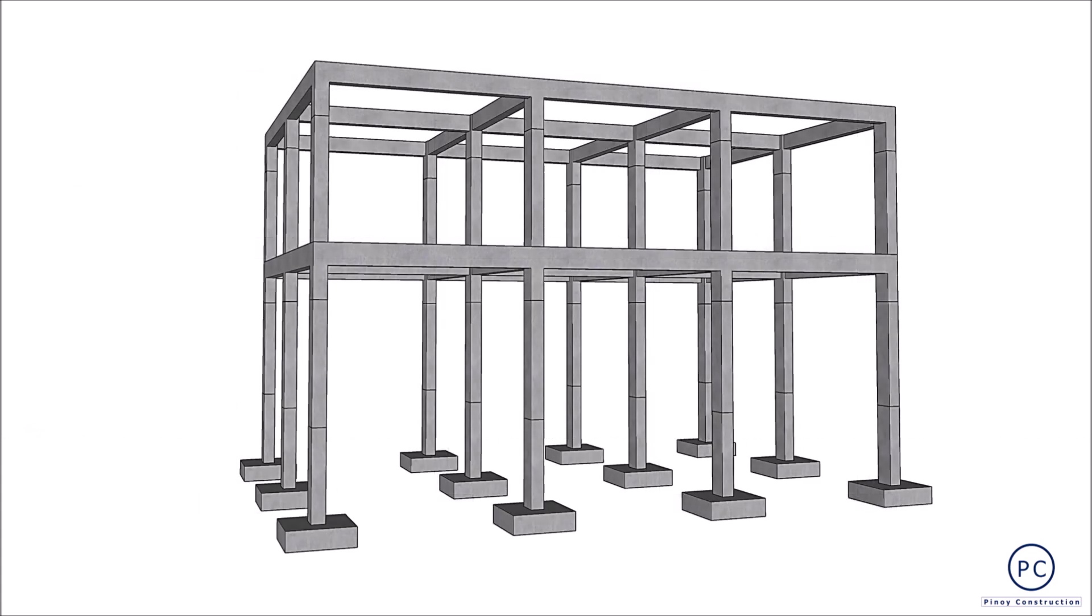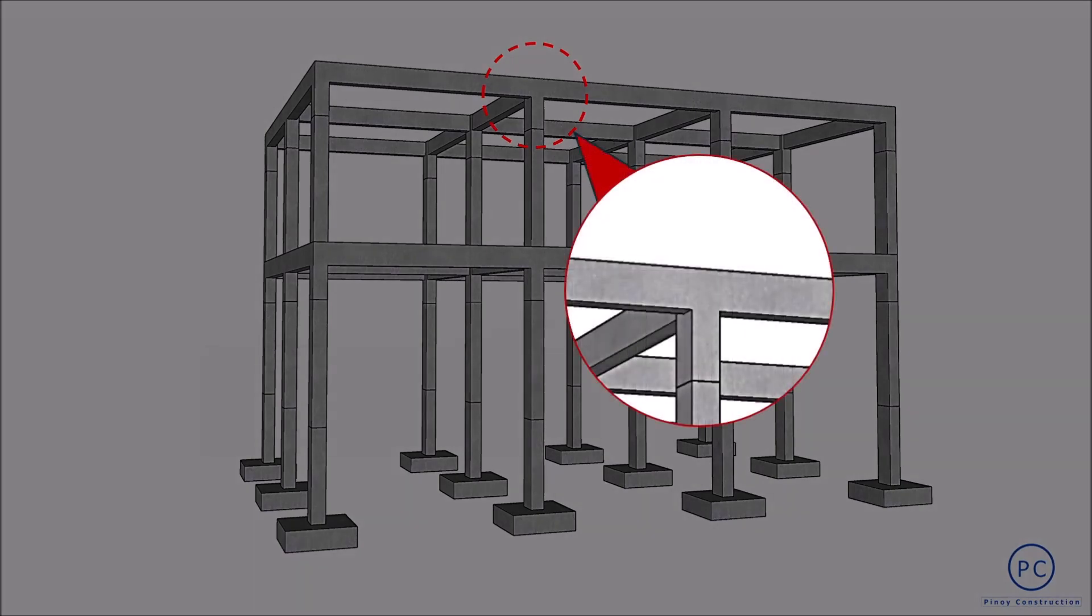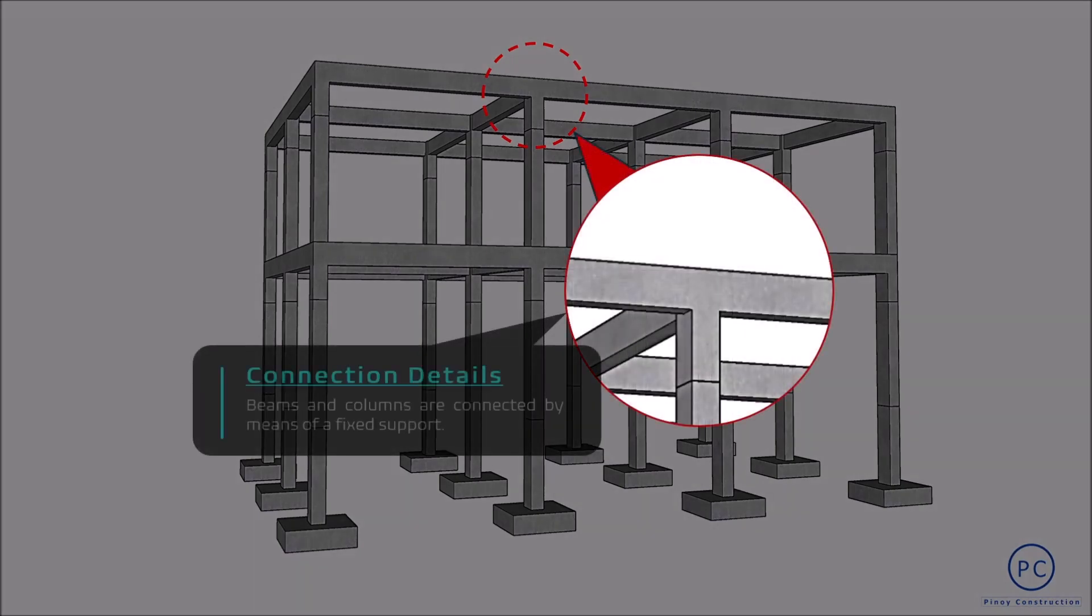Frame can extend into a three-dimensional space in order to support the floor or roof slab. Isang mahalagang bagay na ang mga structural members na to ay connected by means of a fixed support. A fixed support indicates that rotation and linear displacement in all direction is restricted.